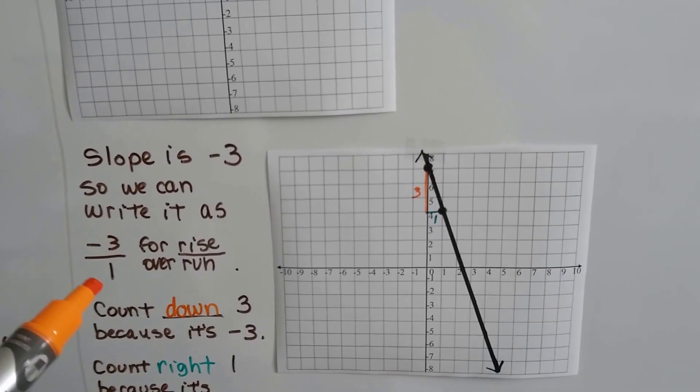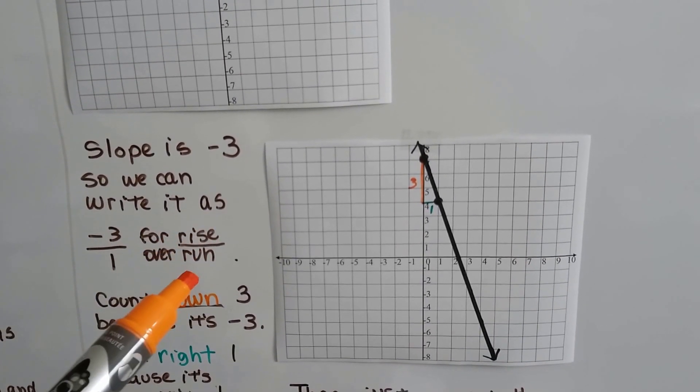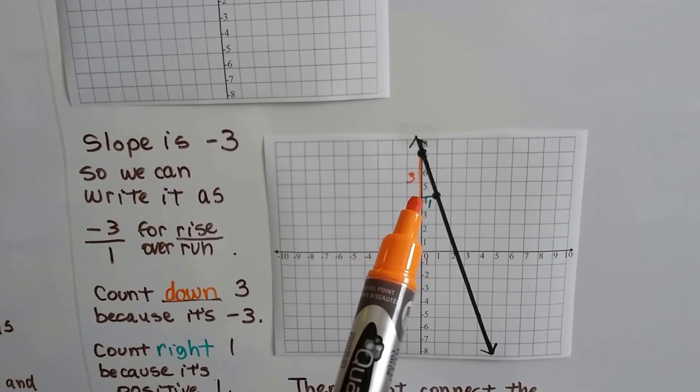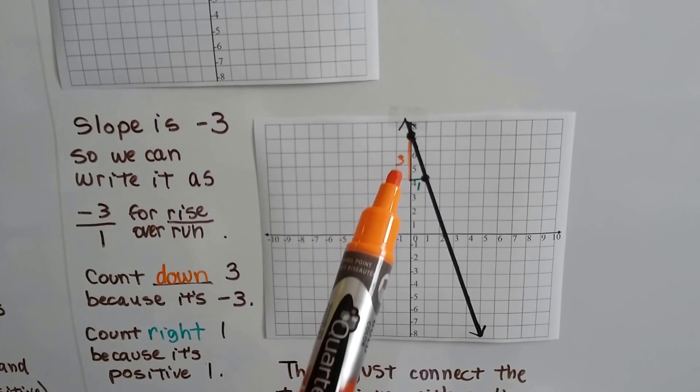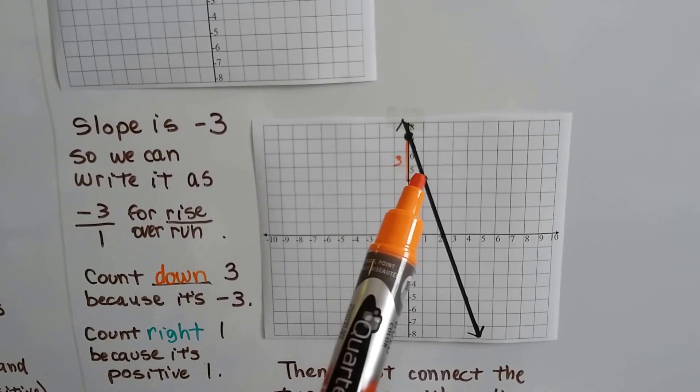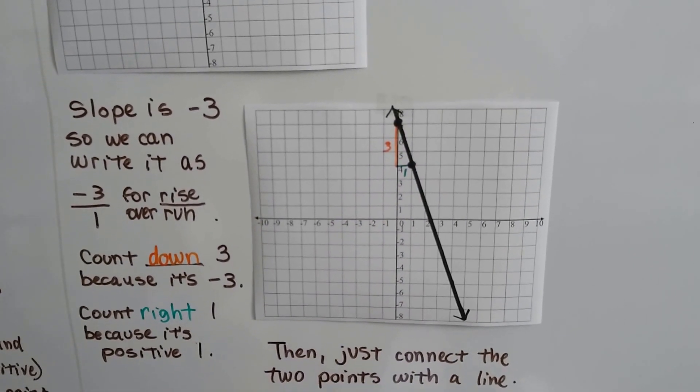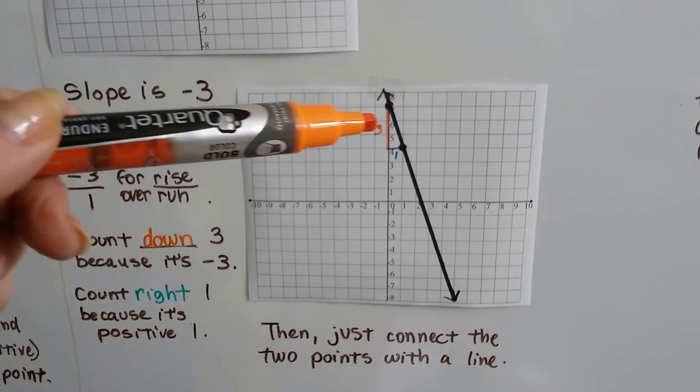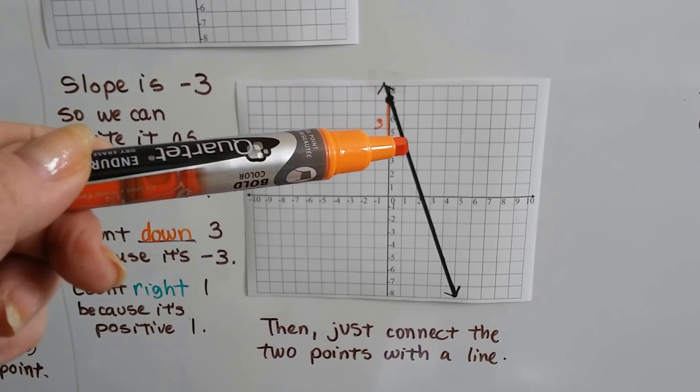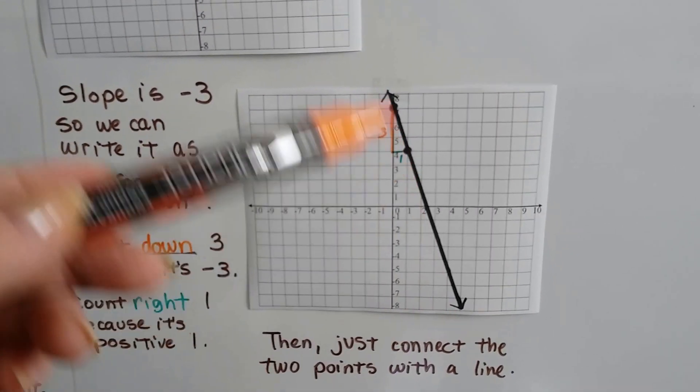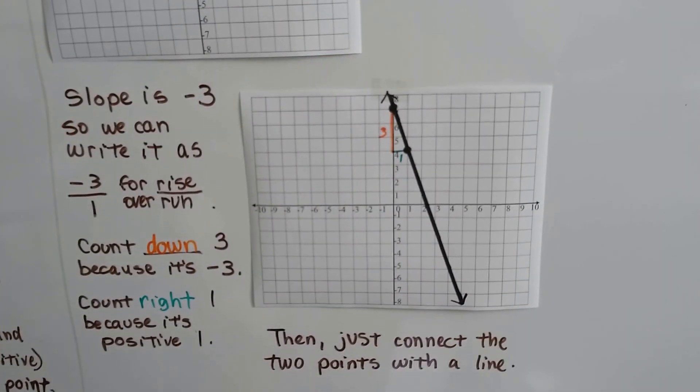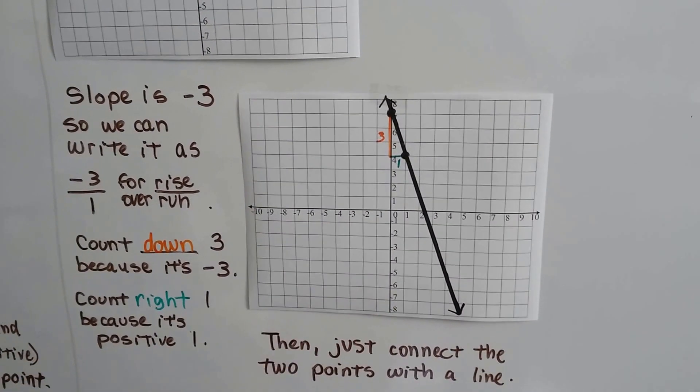And because we wrote it as negative 3 over 1, we know our rise over our run. So we know our run is gonna be 1 to the right because it's a positive 1. We're gonna move it to the right. There's our slope right there. It's negative 3 over 1. Then all we have to do, because we have a point here and now we have a point here, is just connect the points. And we just draw the line. We have a negative slope because it's falling to the right.